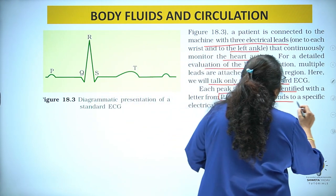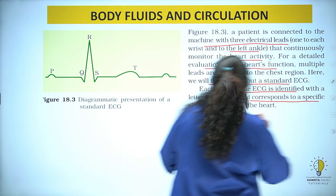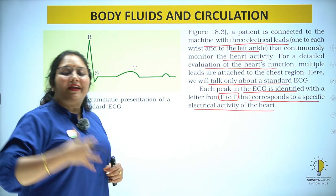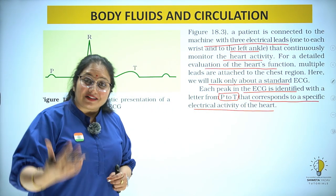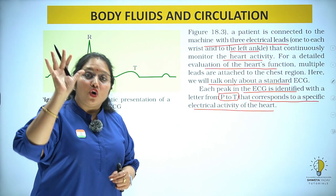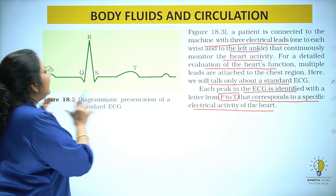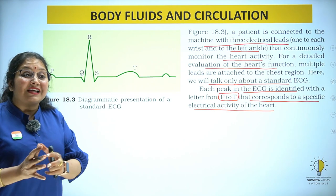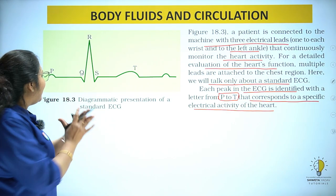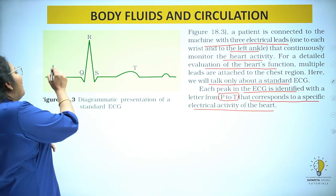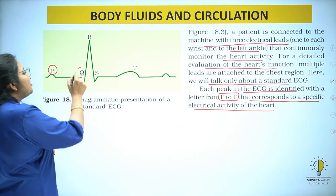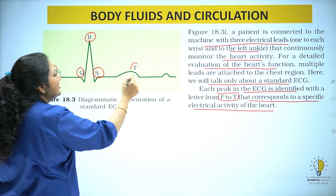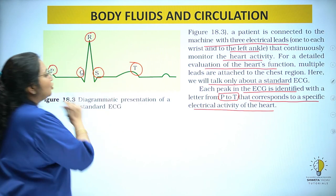Each of these letters corresponds to a specific electrical activity of the heart — P, Q, R, S, T. The heart's activity is shown by electrical activity. In a typical ECG trace, P is identified, then Q, then R, then S, and then T.